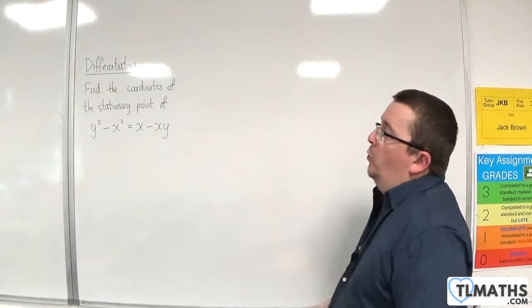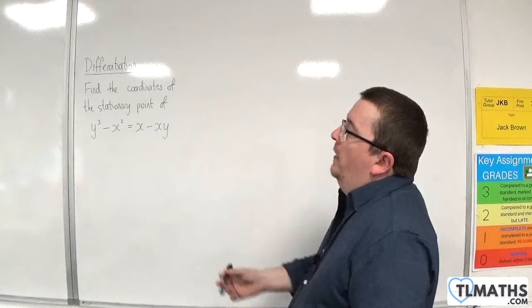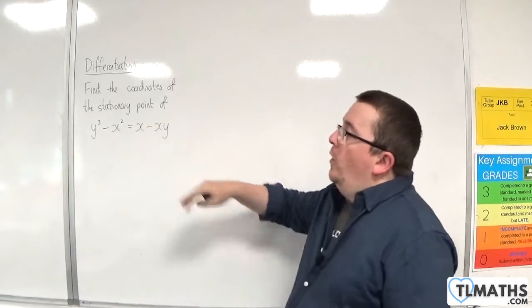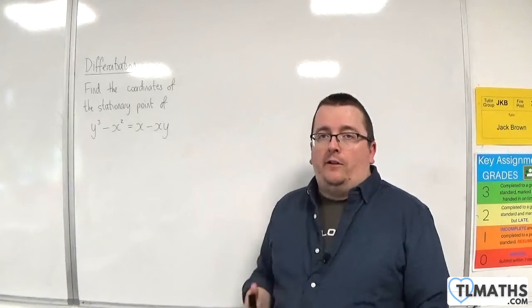So let's say we want to find the coordinates of the stationary point of this curve, y³ - x² = x - xy.